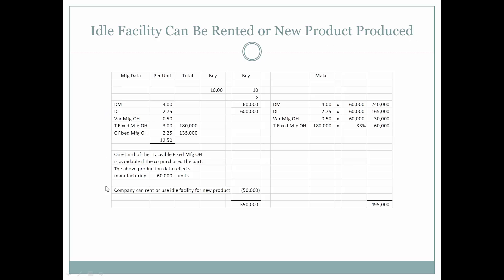We have the same information and data as before. We're buying from an outside vendor at $10 per part, 60,000 parts. It's going to cost us $600,000. Additionally, we have the same information here and it's still going to cost us $495,000 in order to make the part.